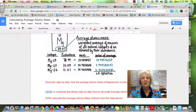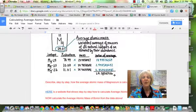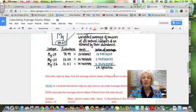So we multiply the percent or change it to a decimal, multiply it times the mass in each case, and add it up. And then we get this number that is the average atomic mass of magnesium. And that is actually how we do it.